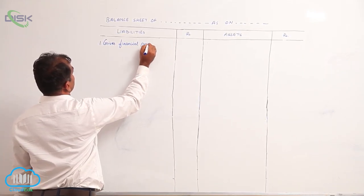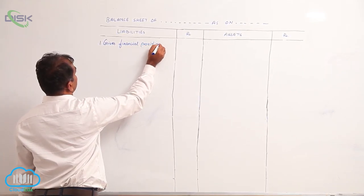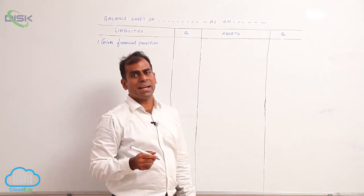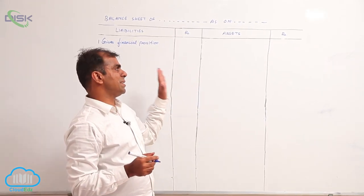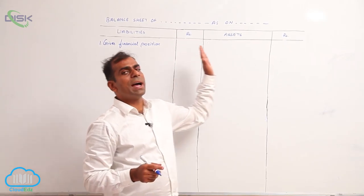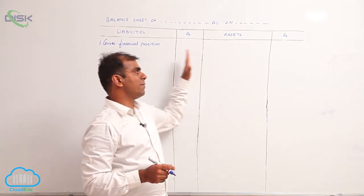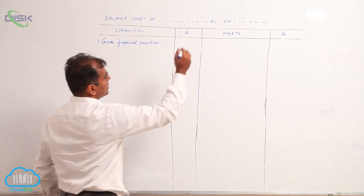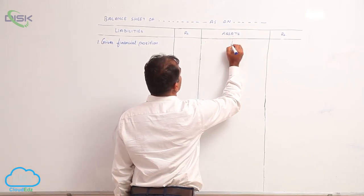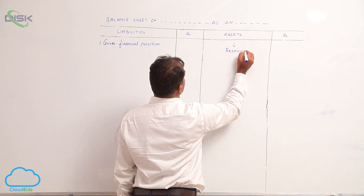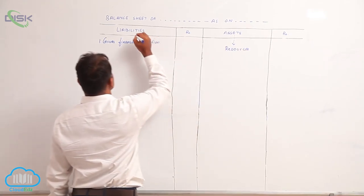It gives financial position of the business. What do you mean by financial position? Simply financial position means where you have your assets and you have your liabilities. So, these assets are representing your resources. Assets are representing your resources.